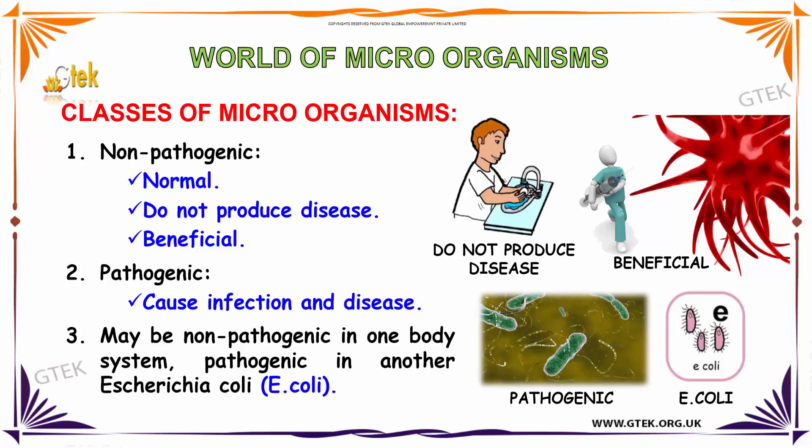The second one is pathogenic. Pathogenic causes infection and disease. The third class may be non-pathogenic in one body system and pathogenic in another — for example, Escherichia coli. You can see E. coli over here.